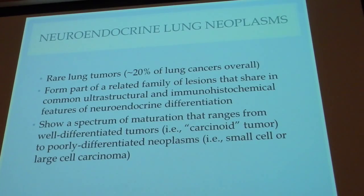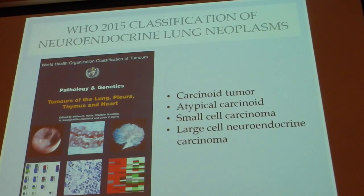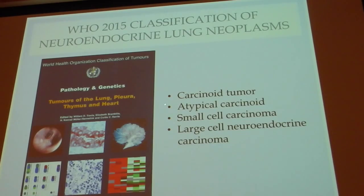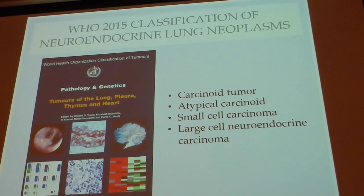They can show a spectrum of maturation, ranging from very well-differentiated, low-grade tumors to very high-grade and poorly differentiated neuroendocrine tumors. The classification currently used is the WHO, and the 2015 edition presents four categories: carcinoid tumor, atypical carcinoid, small cell carcinoma, and large cell neuroendocrine carcinoma.